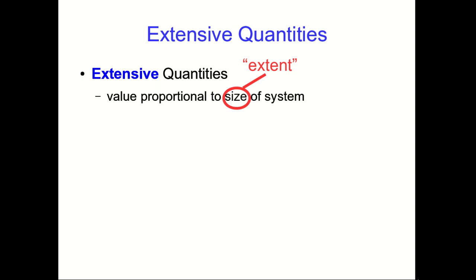And so this is a quantity that is proportional to the system extent. This may not be meaningful to you yet. I'll proceed by some examples which should make it clear.